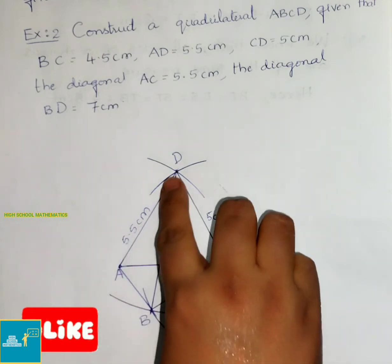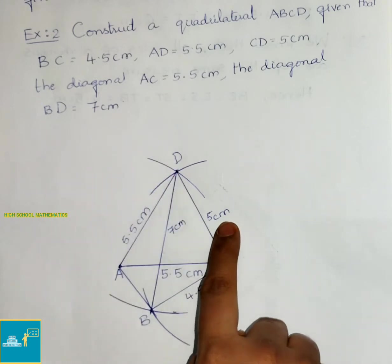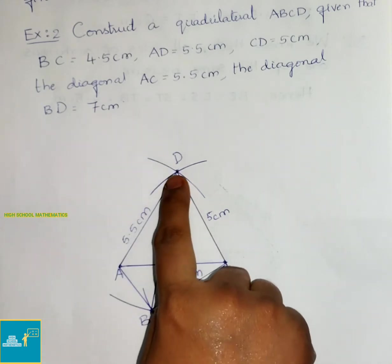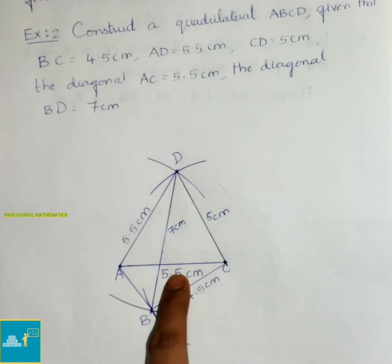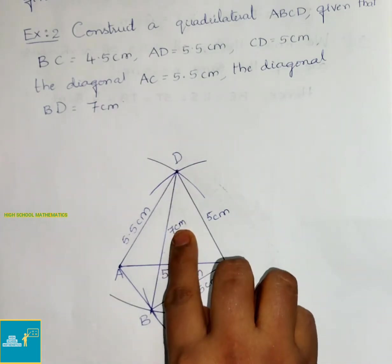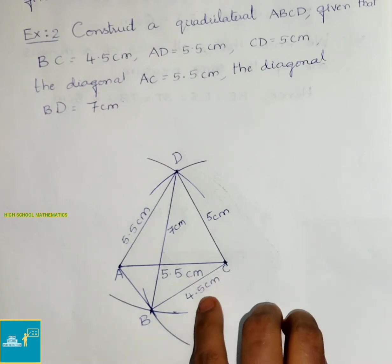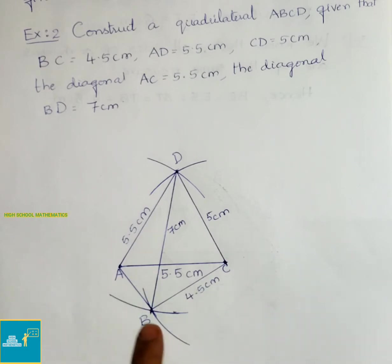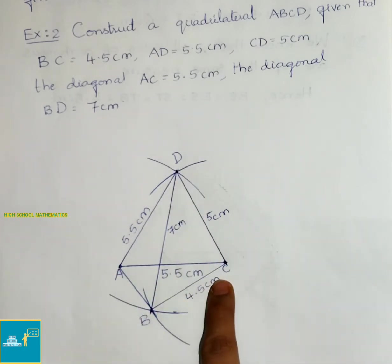AD is 5.5 cm, CD is 5 cm, and both arcs meet at point D. Base AC is 5.5 cm. With D as center, we drew an arc of 7 cm; from C, an arc of 4.5 cm. These intersect at point B. Then we joined BD, AB, and BC. Therefore ABCD is the required quadrilateral.